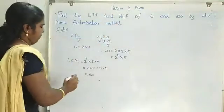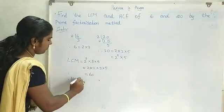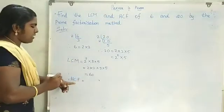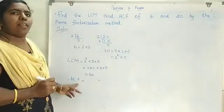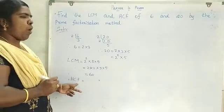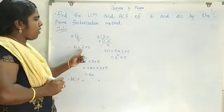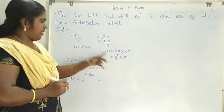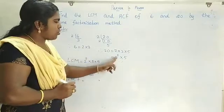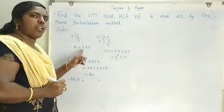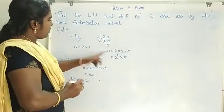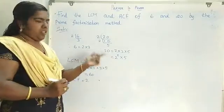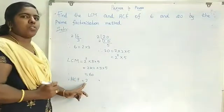Let's find out HCF. HCF means product of smallest power of each prime factor. Here we have 2 and 2 squared, so the smallest power is 2. Then there is no common factor. Therefore, HCF is equal to 2.